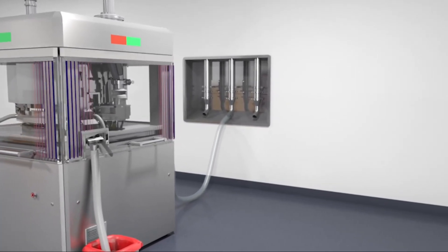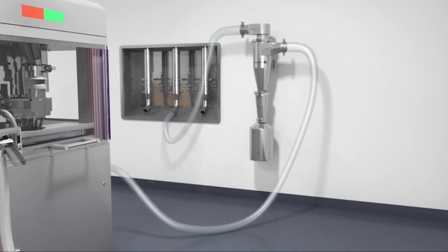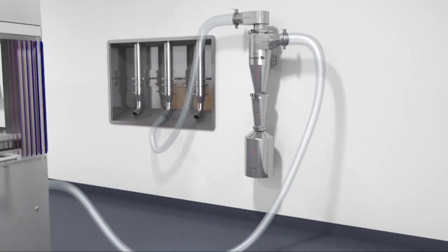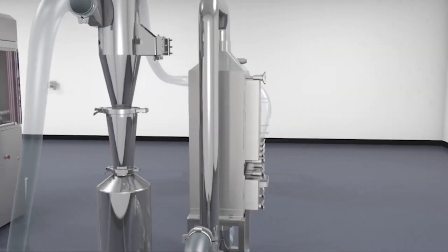Hanningfield have engineered a solution to these common problems: the Unidust High Efficiency Filterless Powder Recovery Cyclone. The cyclone is designed to be fitted or retrofitted between the process machine and the local exhaust ventilation line inside the process room.